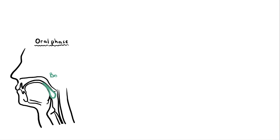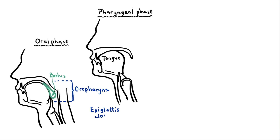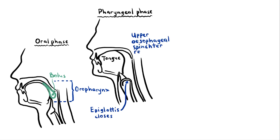The oral phase is where food is prepared into a bolus and the act of swallowing occurs. Swallowing involves a number of processes which will result in food entering safely into the oropharynx. During the pharyngeal phase, the tongue covers the oropharynx and the epiglottis closes the airway, and the upper esophageal sphincter relaxes, allowing the food bolus to move into the esophagus.